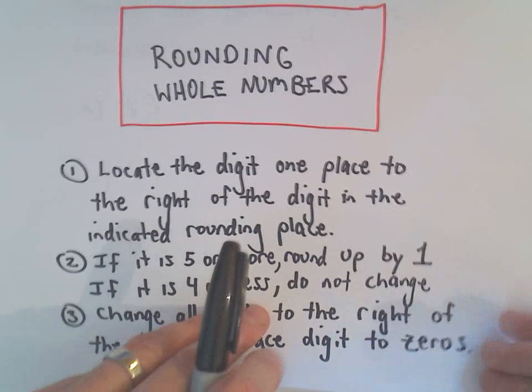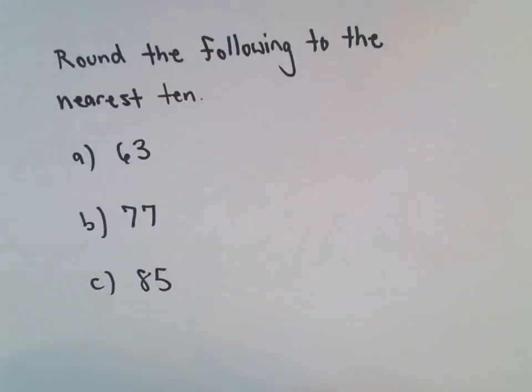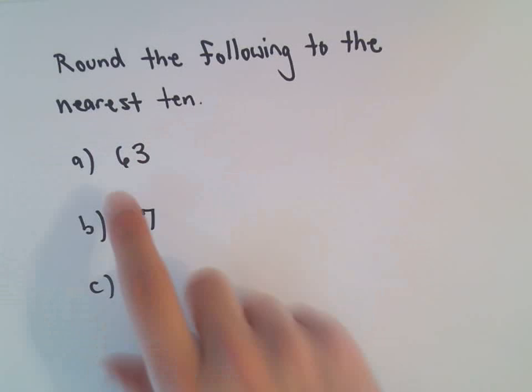So to me, when it looks all wordy like that, it looks more complicated than what it is. But in this case, it says round the following to the nearest 10.